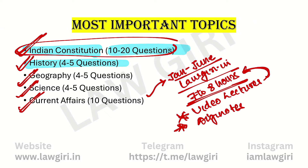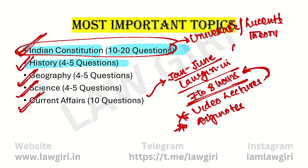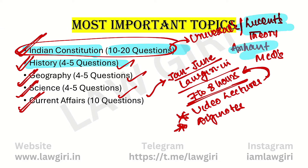For Indian Constitution, if you have Universal's book, do it from Universal's. If not, you can read the theory from Lucent's book and practice questions from Arihant's MCQs or any MCQs book. Similarly for History, Geography, and Science — read Lucent's and do MCQs. The level for static GK is a little high, so these are very very important topics.